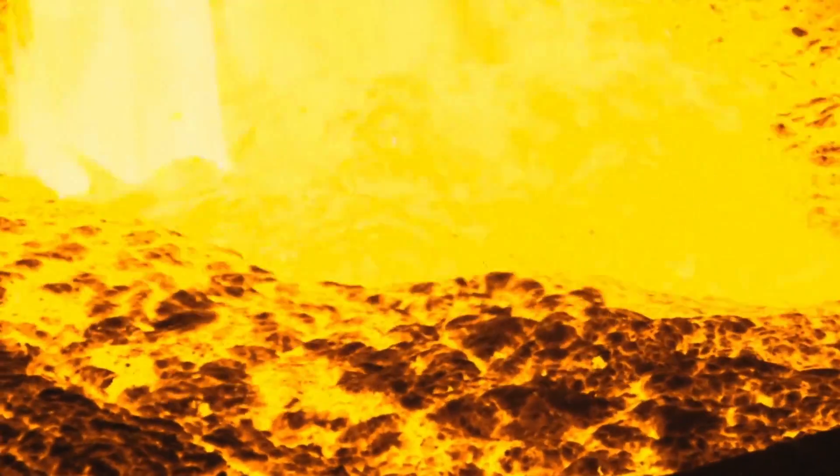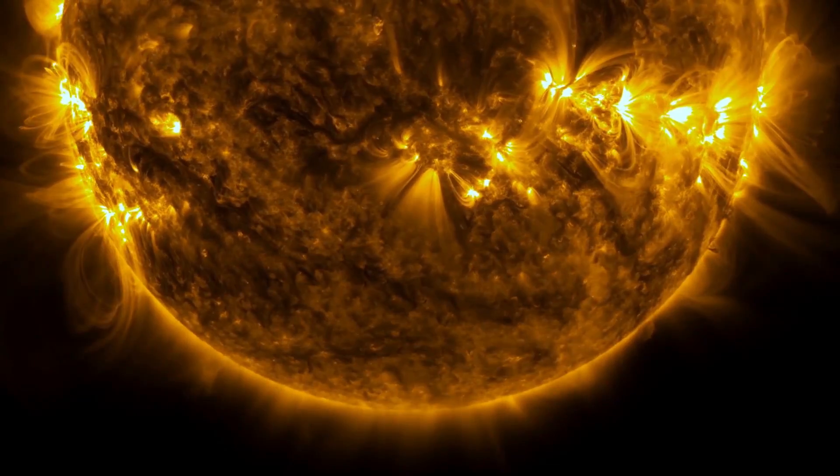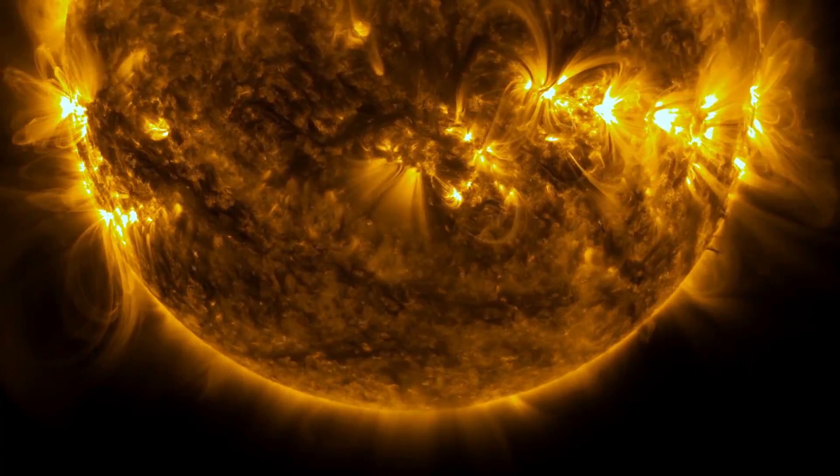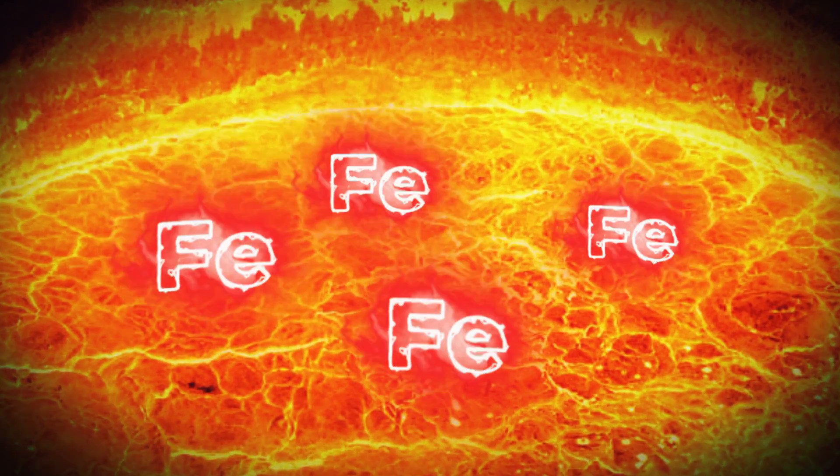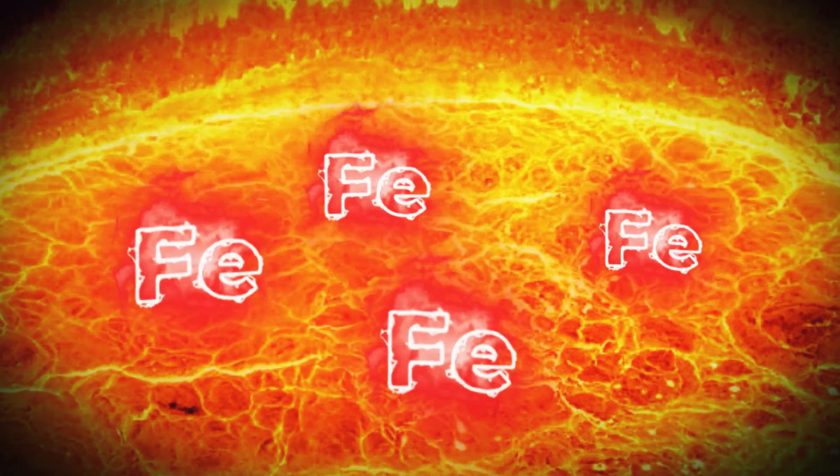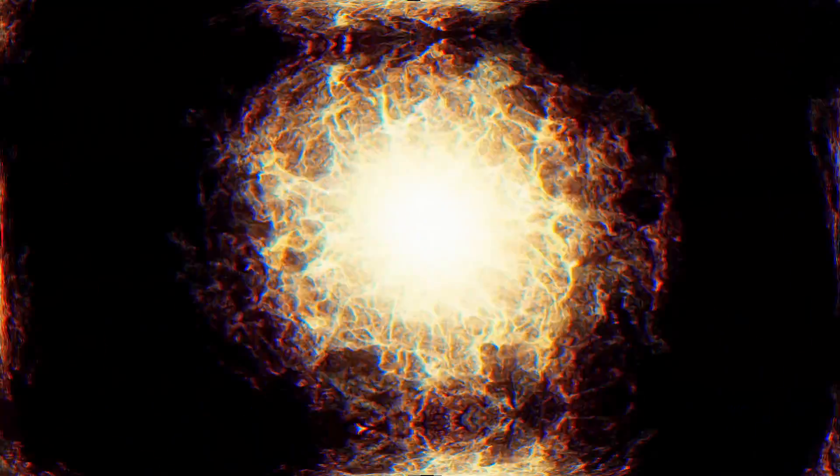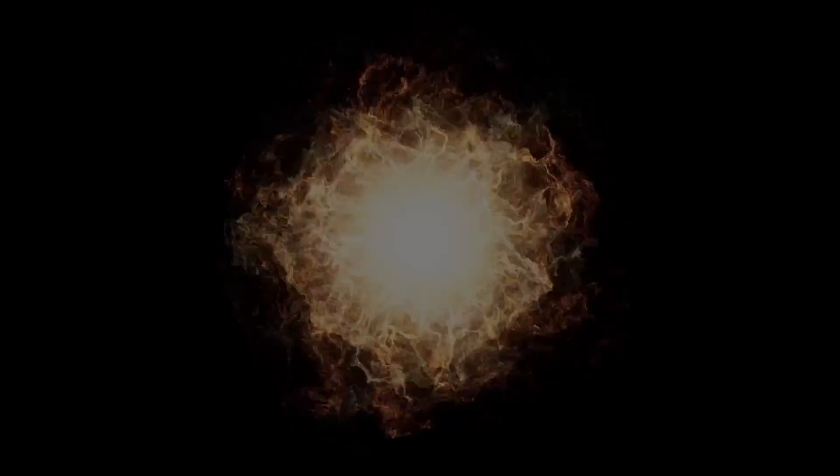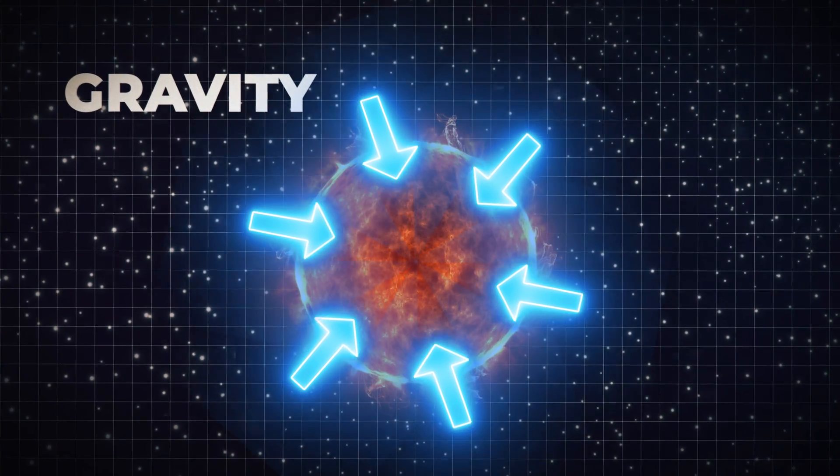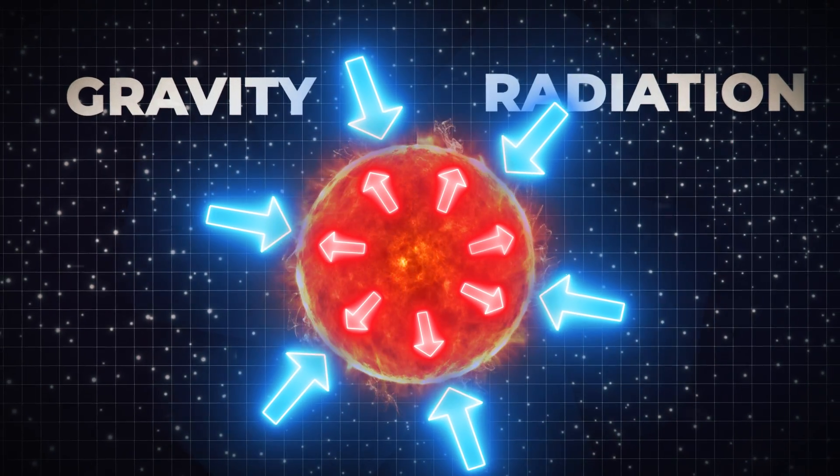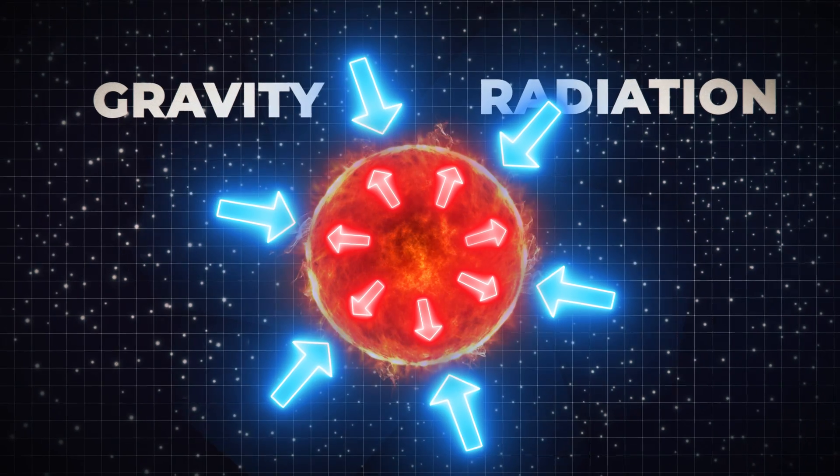However, the reaction of fusing silicon to form iron atoms no longer produces energy for the star to use and instead becomes an energy sink. Since the iron in the core is not actively generating energy, it begins to rapidly contract. The constant fight between the inward pull of gravity and the outward push of radiation pressure begins to shift in favor of gravity.